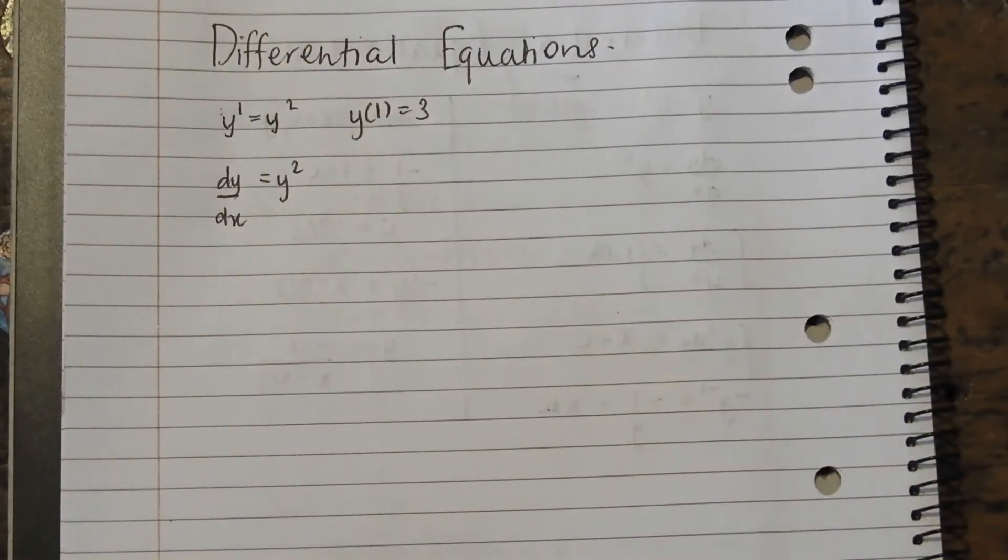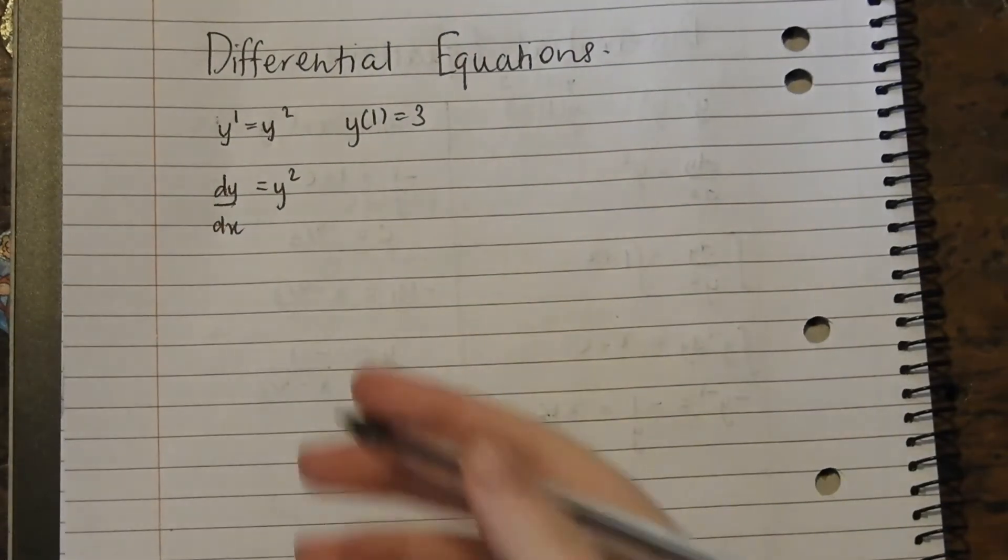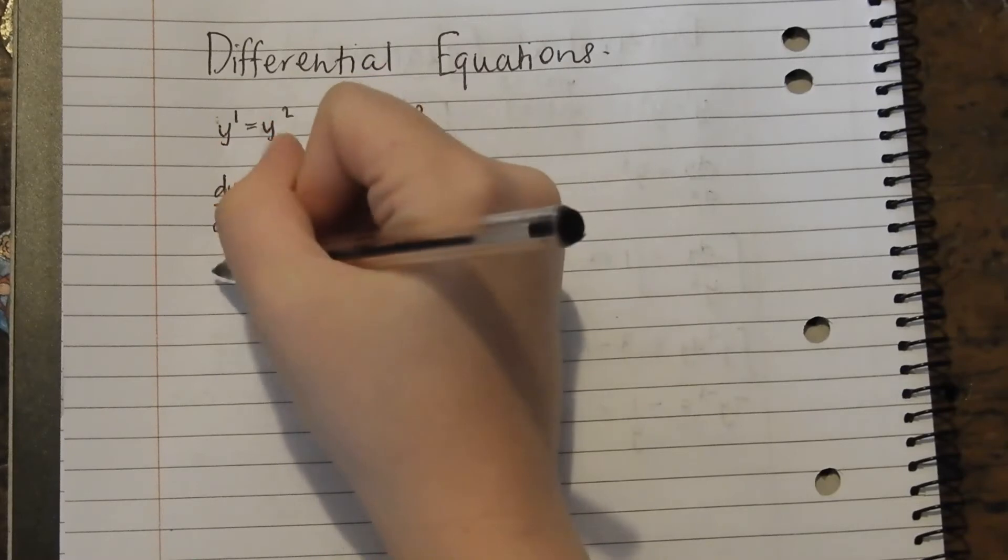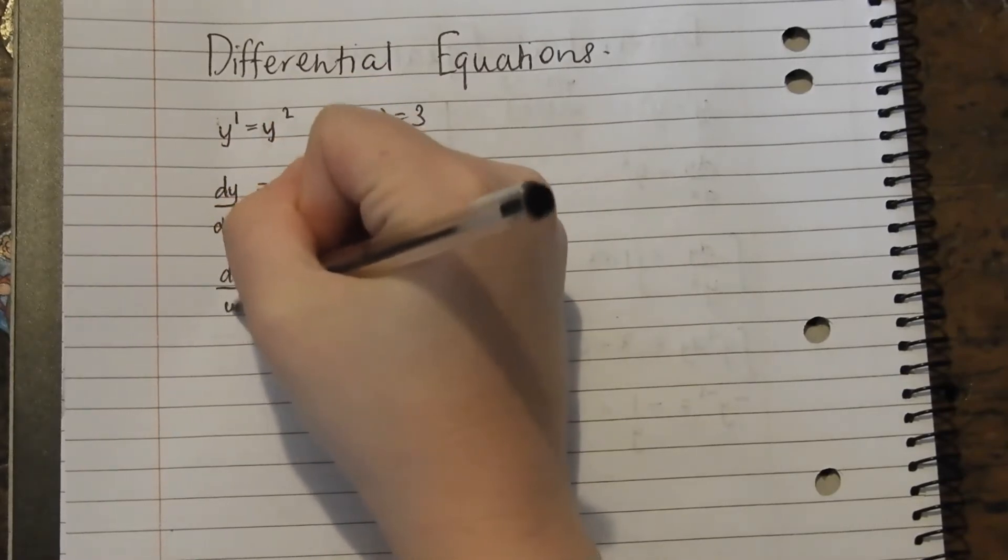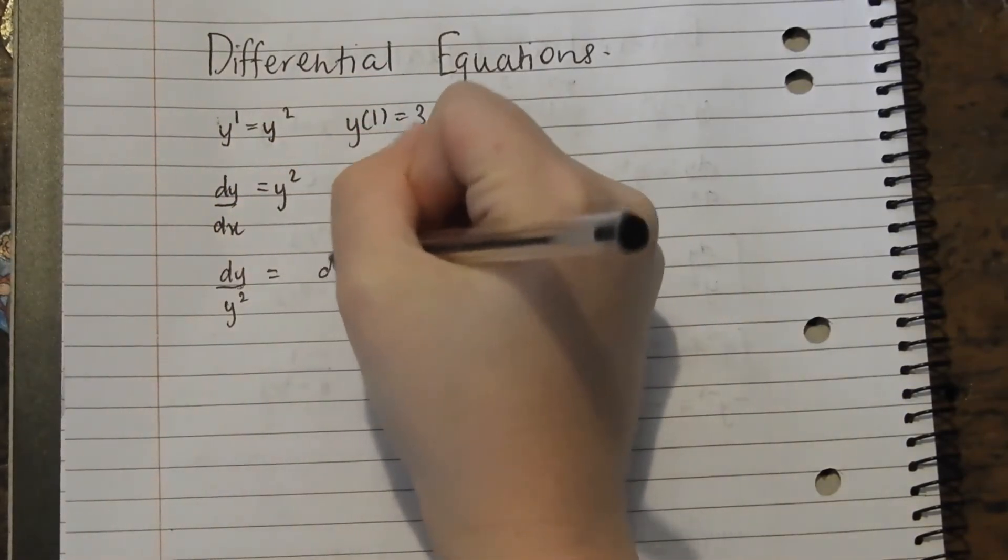Now we want to move all the things that are y to the left hand side, all the things that are x to the right hand side. So we get dy on y squared equals dx.